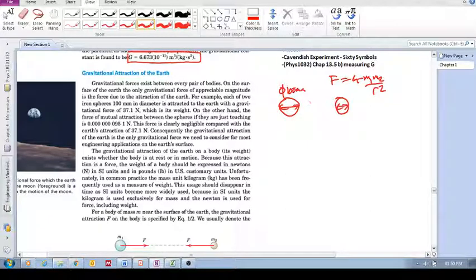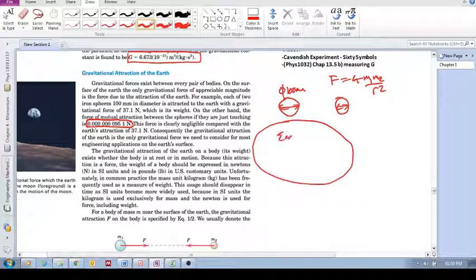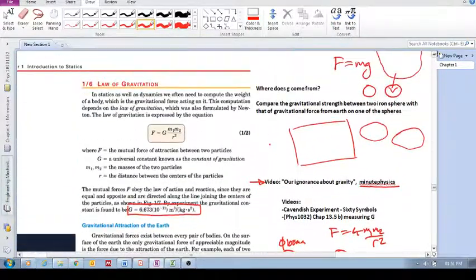The gravitational force given by F equals GM1M2 over R squared, if you calculate the mass of these based on the density and the volume, it gives you 0.000000951 Newtons. That is the gravitational force between these two objects. Whereas, if you compare that gravitational force compared to, say this is Earth, then the gravitational force that Earth applies to that object is 37.1 Newtons. So compare these.